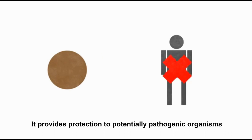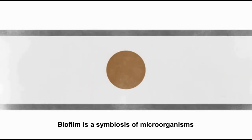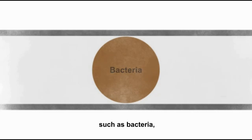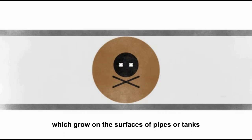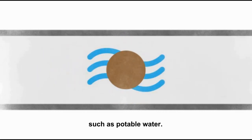It provides protection to potentially pathogenic organisms that eventually affect human health. Biofilm is the symbiosis of microorganisms such as bacteria, protozoa, and some types of algae and fungi, which grow on the surfaces of pipes or tanks, which are in contact with a liquid such as potable water.